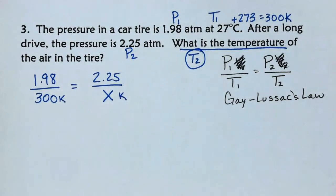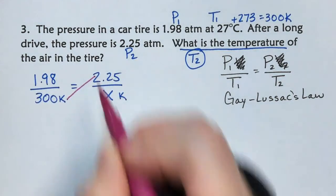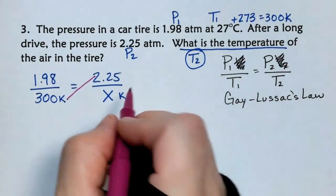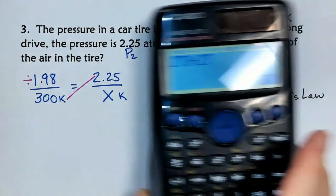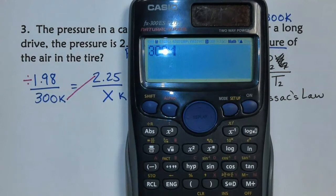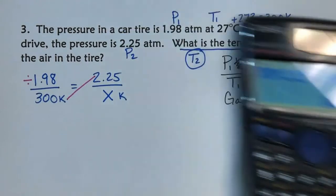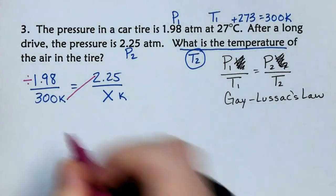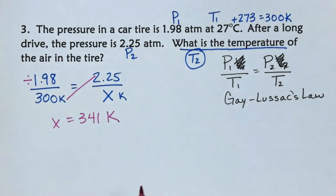So, let's go ahead and calculate this. You're going to start your cross, not with your X, opposite the X. So, I'm going to cross multiply there, and then that leaves this. I'm going to divide by 1.98. So, 300 times 2.25 divided by 1.98, and we get 341. So, we're going to write X equals 341, and that unit is Kelvin.